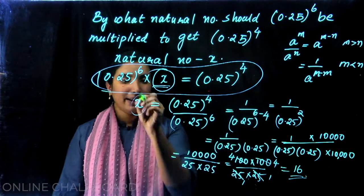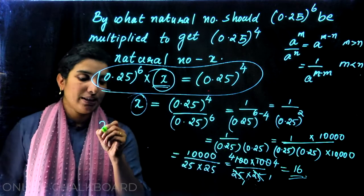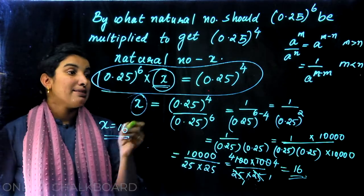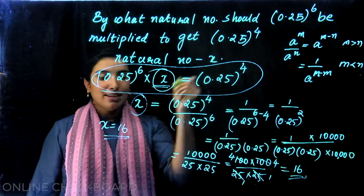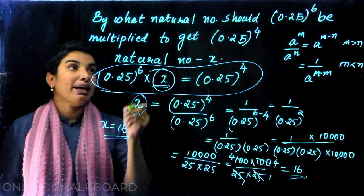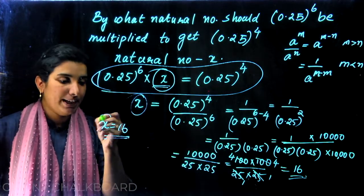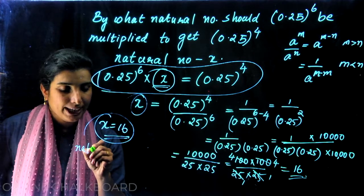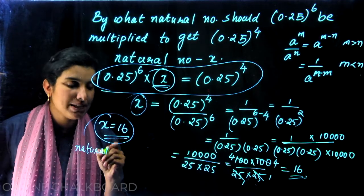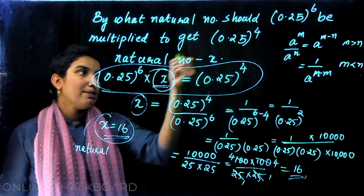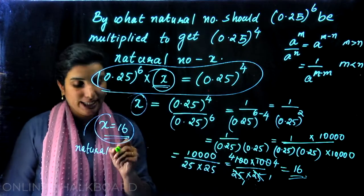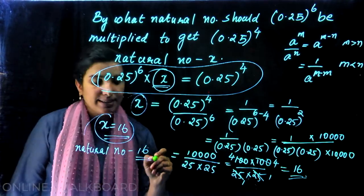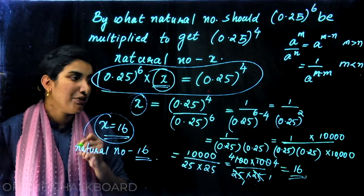If we have the value of 16, we need the value of 16. If we add the value of 16, what is the value of 16? This is the natural number. If this is the natural number, then we have found that natural number. Which is the variable x equal to 16, we call it 0.25 raised to 4 equal to 16.